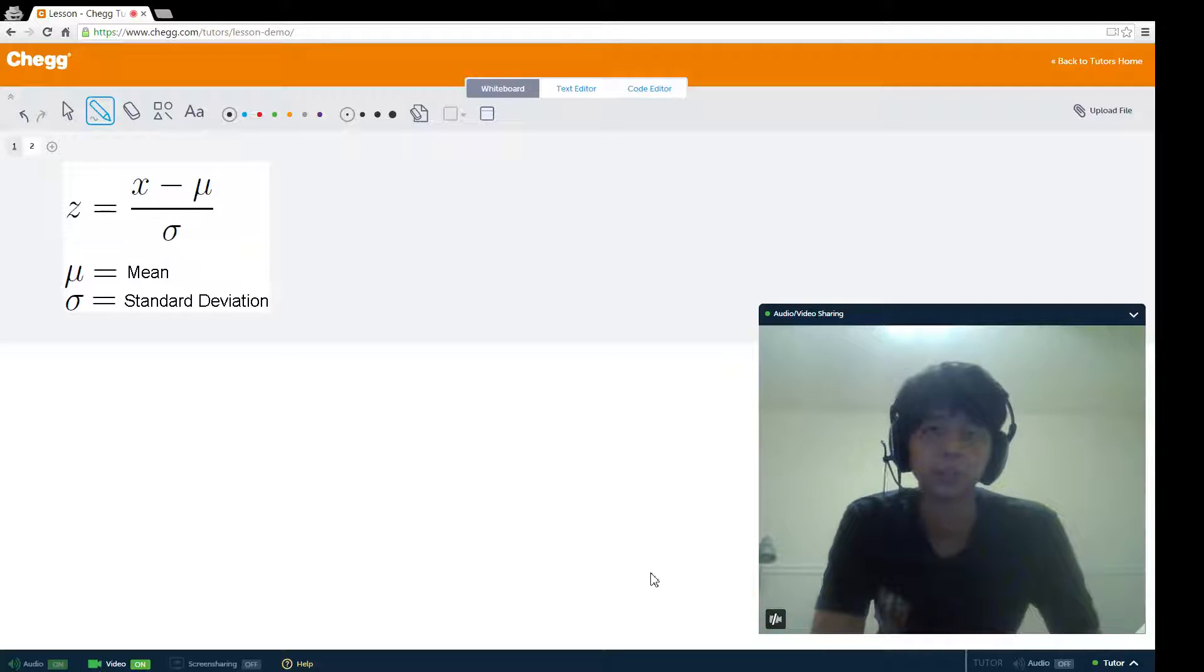Z-scores are used with normal distributions, and they describe how many standard deviations a certain observation from a normal distribution is from the mean. There are a couple things to know before you use z-scores. The first is that you're assuming that the population is indeed normal. And the second is that you know what these symbols mean for the formula.